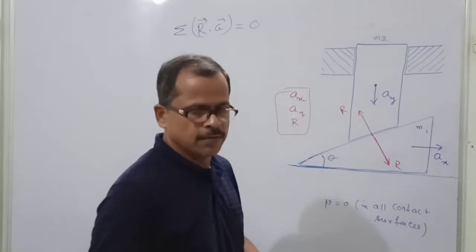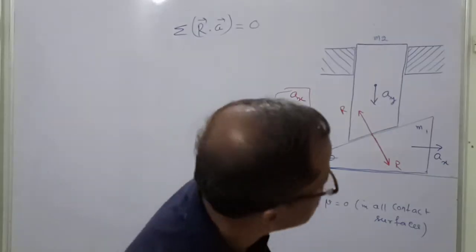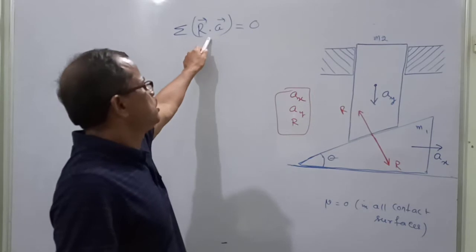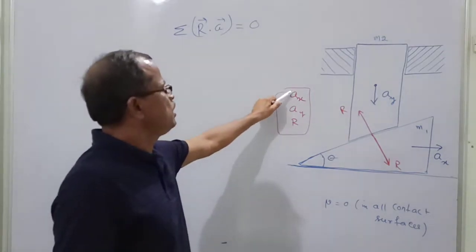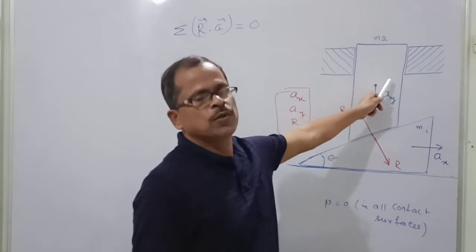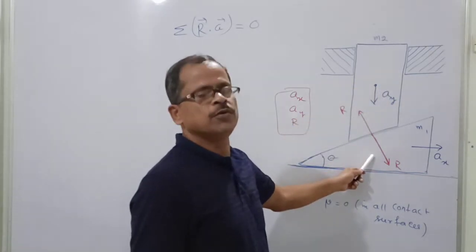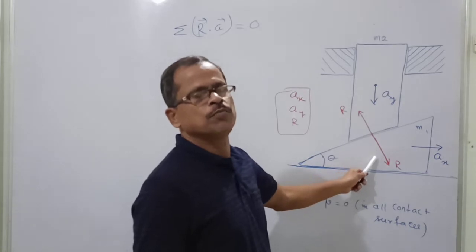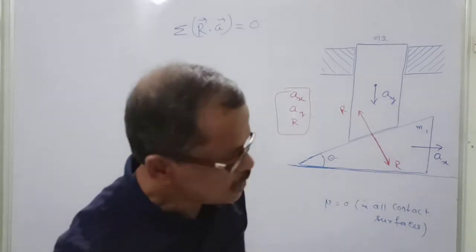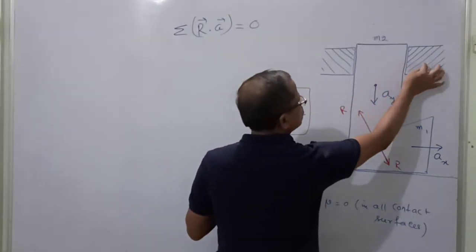Now the equations are to be developed. First, I will develop the constraint equation — that is the relation between AX and AY. Then I will write the Newton's second law for each body to get the second and third equations. Please follow how I am proceeding.